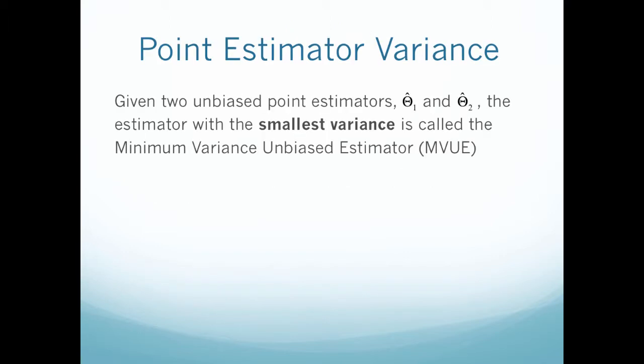Given two unbiased point estimators, theta hat 1 and theta hat 2, the estimator with the smallest variance is called the minimum variance unbiased estimator, or the MVUE. This is often referred to by statisticians because we care which one has the smallest variance. The point estimator with the smallest variance is the one that you're going to want to choose to represent your population.